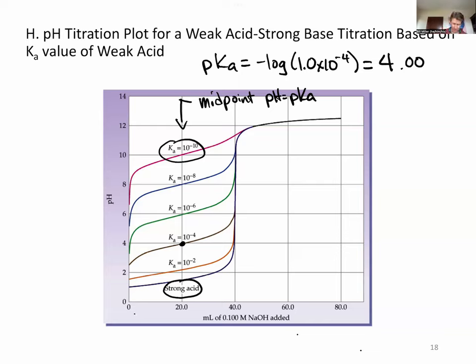And this region right here is called the buffer region, because you're taking some of that weak acid, when you add the strong base, you're converting some of the weak acid into the conjugate weak base, and you have a buffer.